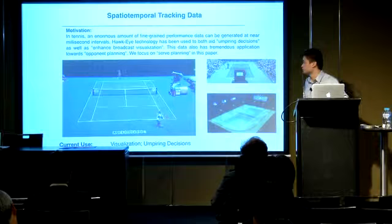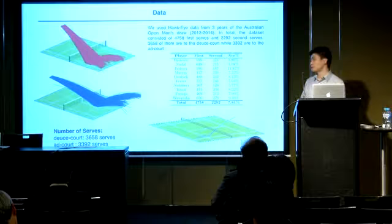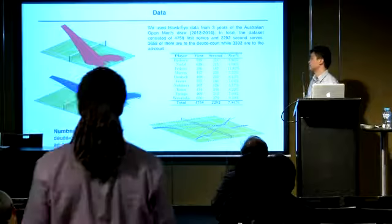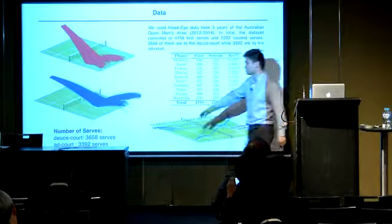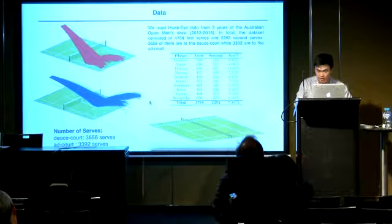Here is an example of the Hawkeye data. It can capture the trajectory of the ball and can decide whether it's inside or outside. The data we used are three years of Australian Open Men's Singles matches from 2012 to 2014. In total we have about 7,000 serves — about 3,600 to the deuce court and 3,400 to the ad court. On the bottom right here is an example of the Hawkeye data.